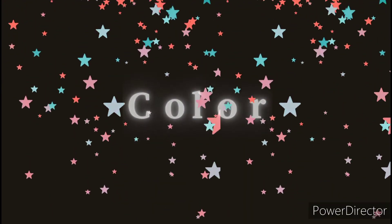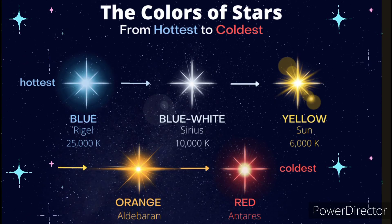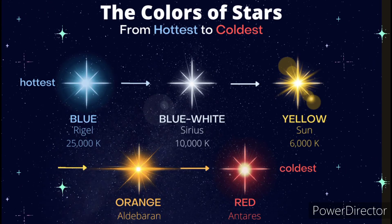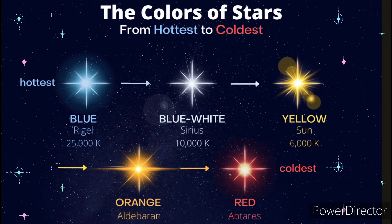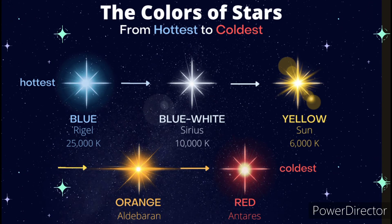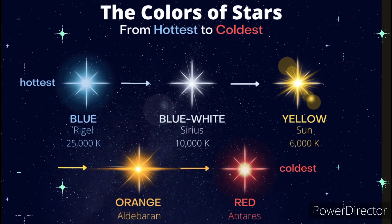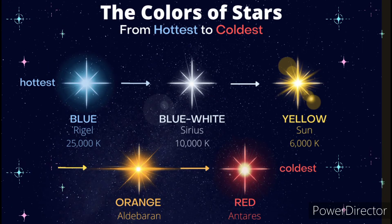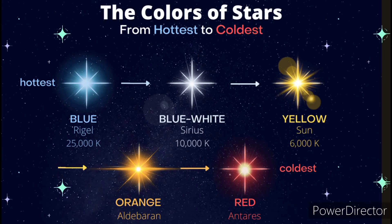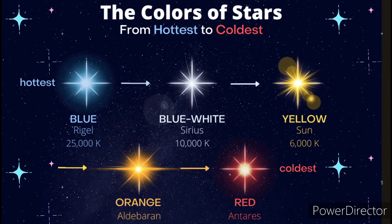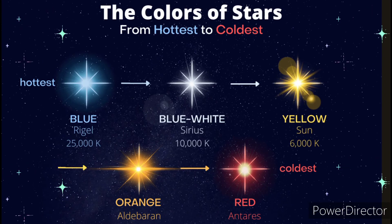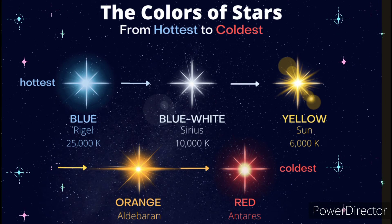The color. Stars come in a variety of colors, which indicates their temperature. The temperature of a star is closely related to its color. Blue is considered the hottest — that is Rigel, which has 25,000 Kelvin. Followed by Sirius, which is blue to white, at 10,000 Kelvin. The next is yellow, which is the Sun, at 6,000 Kelvin. Then we have orange, which is Aldebaran. And the last one, considered the coldest, is red, which is Antares.